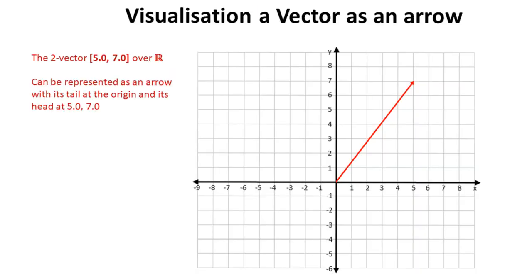We're going to be focusing on two-vectors over R. This is where we provide two sets of numbers, in this case 5 and 7. When we have a 2-vector over R, we can represent the vector as an arrow with its tail at the origin, which in our case is always going to be (0,0), and its head at the coordinate supplied, in this case (5,7).